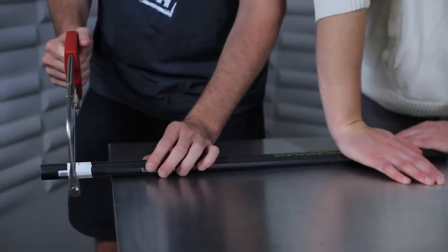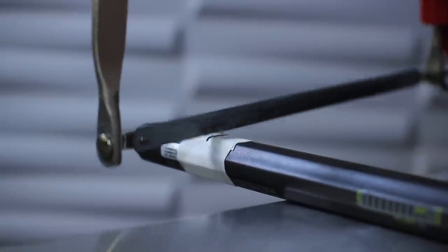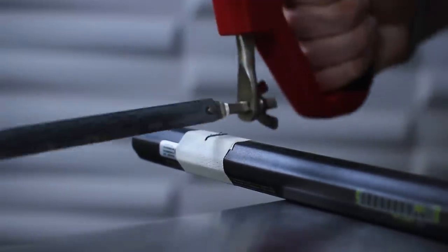Now take the hacksaw and line it up with the guidance line. Use a pullback motion on the saw until a groove is worn into the top layer of the stick.